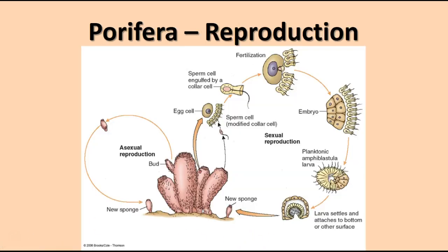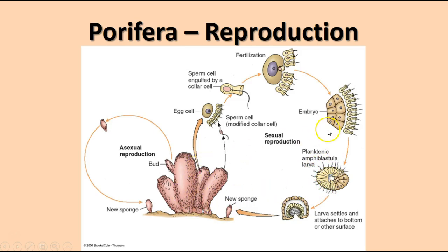In asexual reproduction, a bud forms off the side of the sponge, eventually breaks off, attaches to the ground, and becomes a new sessile adult. In sexual reproduction, the sponge produces egg cells and sperm cells. Generally sperm cells are shed into the water while egg cells remain inside the sponge. Collar cells engulf the incoming sperm cell and implant it into the egg cell to fertilize it. Once fertilization occurs and cell division begins, an embryo forms that eventually produces a planktonic amphiblastula larva, which swims with flagellated cells, leaves the sponge, and eventually settles and attaches to a surface, growing into a new sponge.